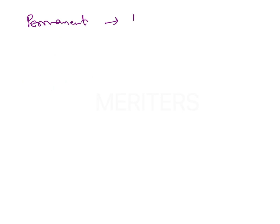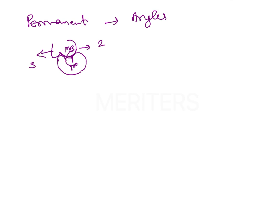The permanent molar relation is based on Angle's classification of malocclusion, where the mesiobuccal cusp of the maxillary first molar is given importance — it needs to fit into the buccal groove of the mandibular first molar. This is Angle's Class 1 relationship. If the mesiobuccal cusp falls ahead of the buccal groove it is Class 2; if behind, it is Class 3.